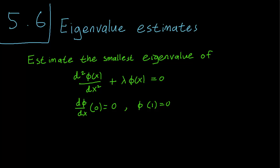Hello class, this is section 5.6. In this video we are going to demonstrate the use of the minimization principle to estimate the smallest eigenvalue of a Sturm-Liouville problem. Here we have a pretty run-of-the-mill Sturm-Liouville problem with Neumann boundary conditions on one side and Dirichlet boundary conditions on the other.